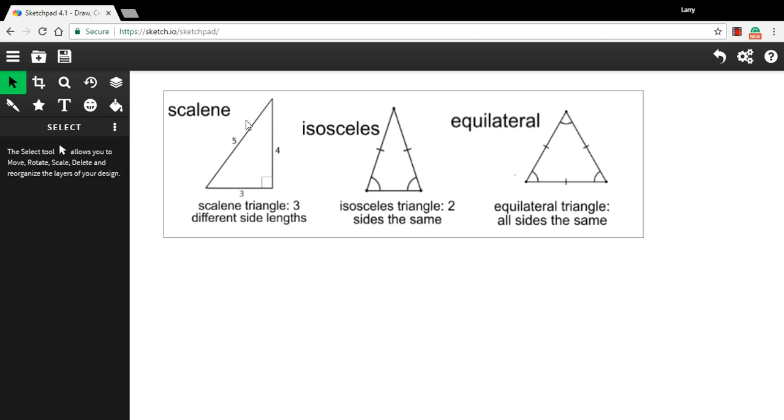You could have a triangle where all three sides have different lengths, like this one. There's a side that's three, a side that's four, a side that's five. They're all different. That makes it a scalene triangle. That's the word for that.